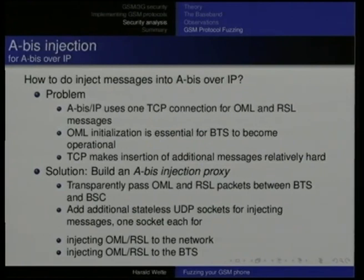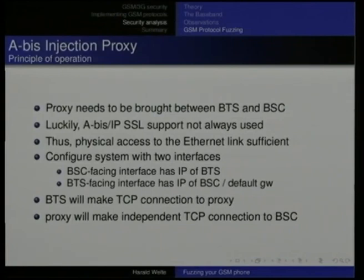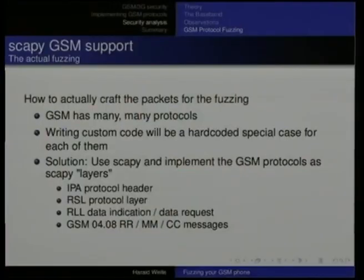There is SSL support for this Abis-over-IP protocol but in many applications I've seen it is not actually used, so it's easy to man-in-the-middle. Physical access to the ethernet link is sufficient. You configure a system with two interfaces: one facing the BTS claiming to be the BSC, the other facing the BSC claiming to be the BTS. Then you're in the middle, you run the proxy, and you have UDP sockets where you can inject random or crafted data into the communication stream.